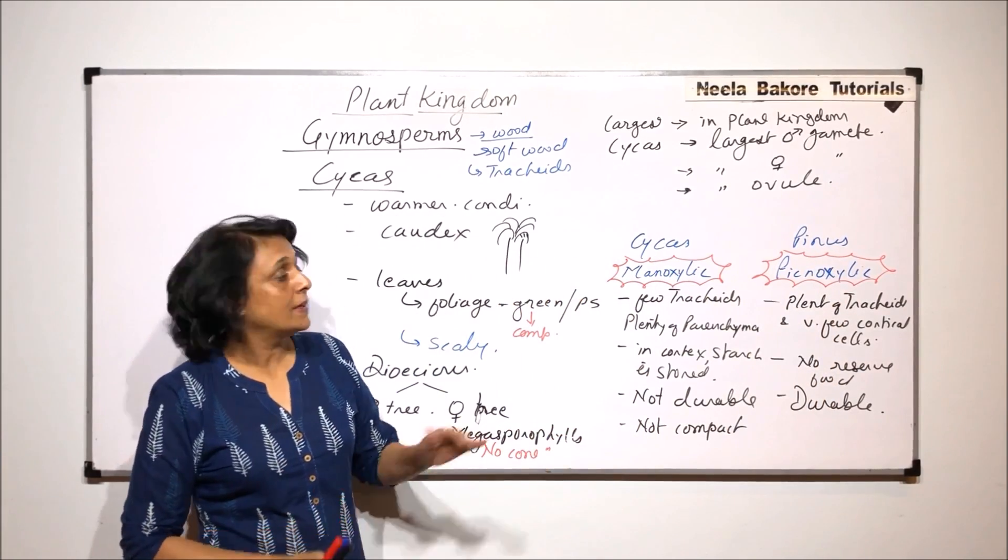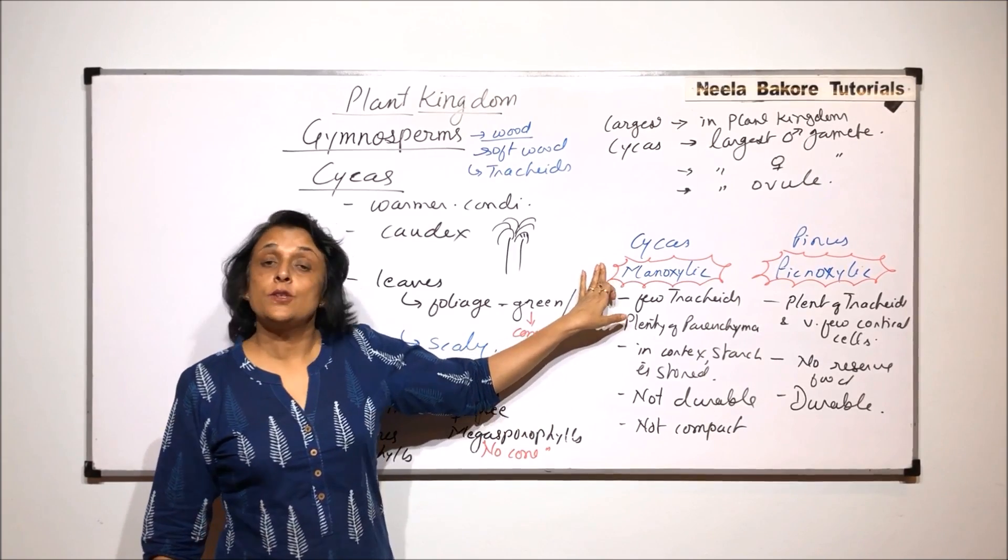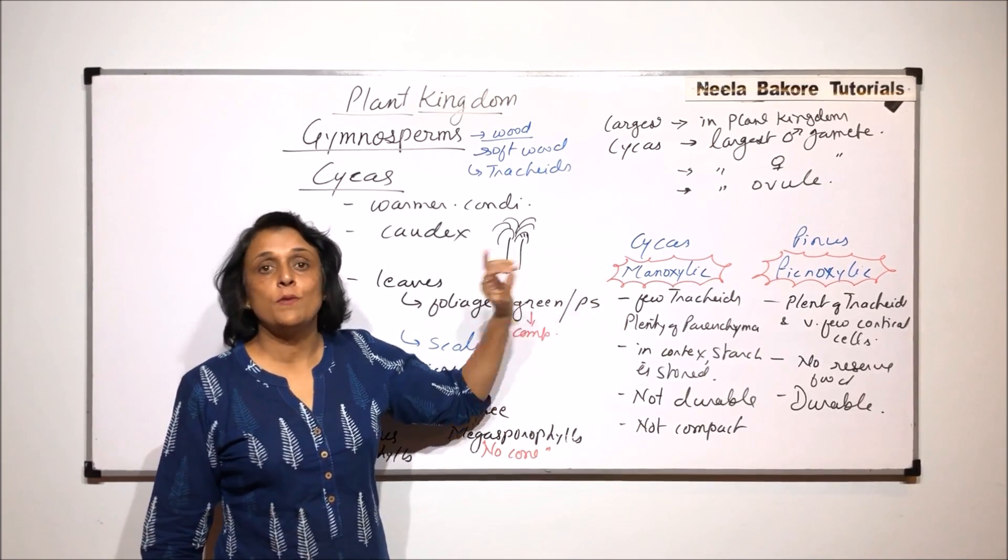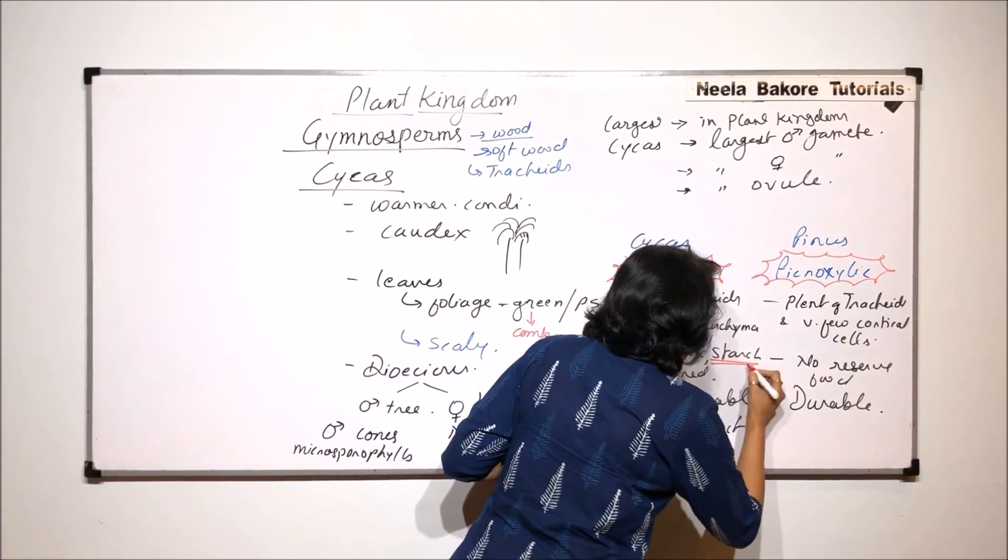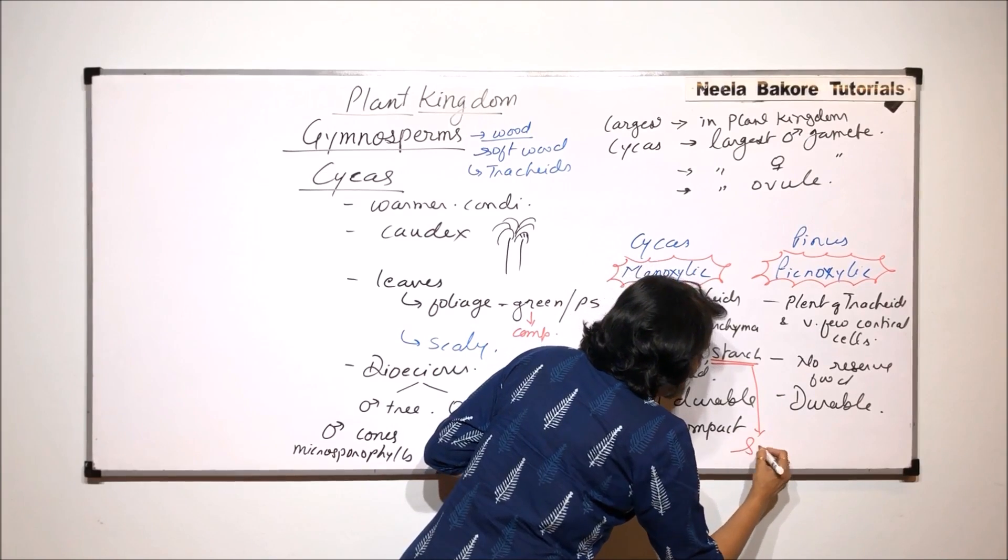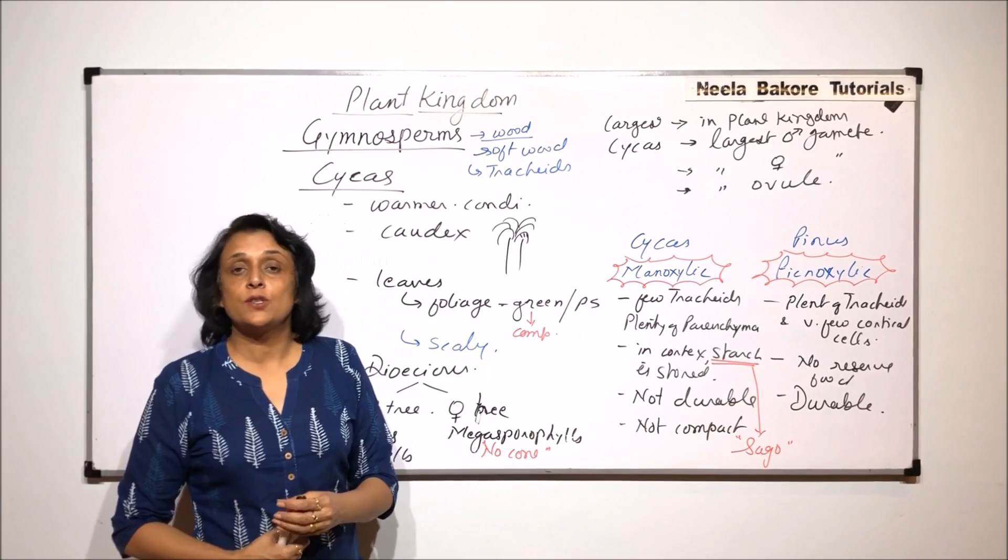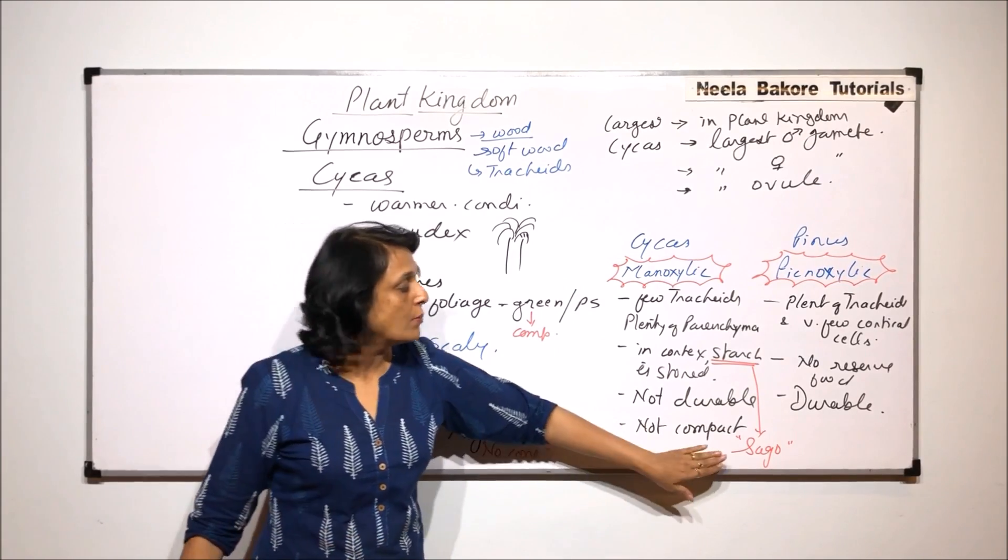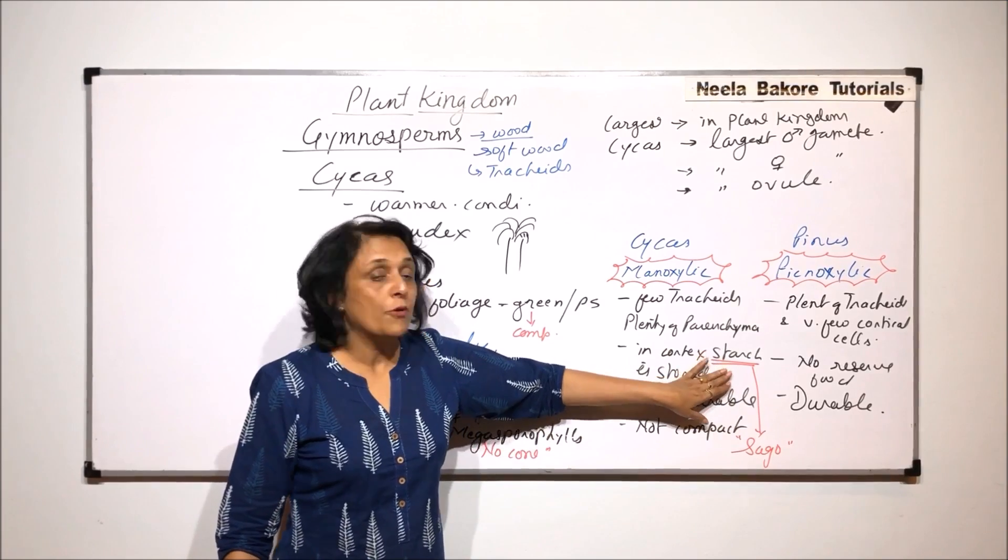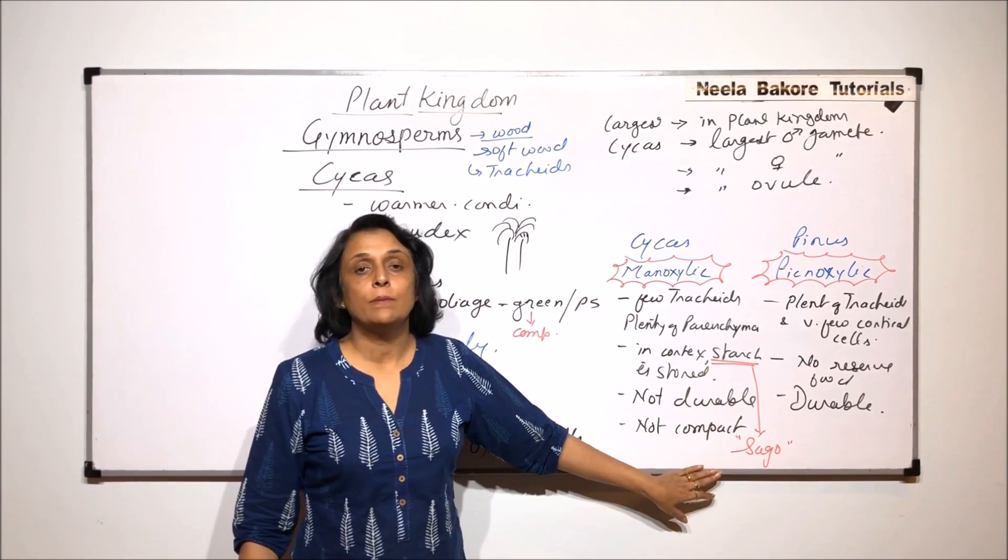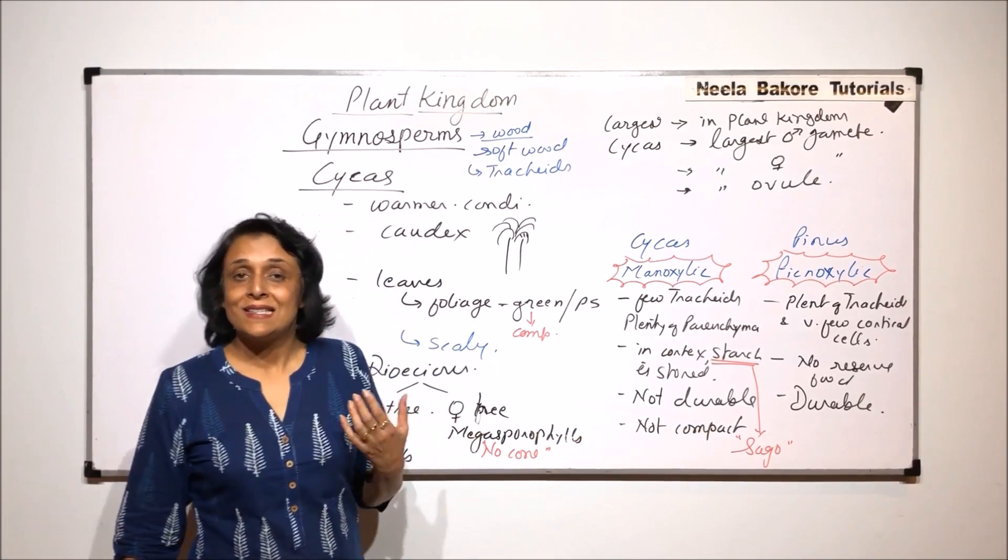So this is another anatomical difference which we talk of. In case of some Cycas varieties, we find that this starch which is stored is extracted and is used as sago. So there is a palm which is called sago palm from where we normally obtain this edible sago, but from Cycas also this sago can be extracted and this is edible because ultimately it is starch.